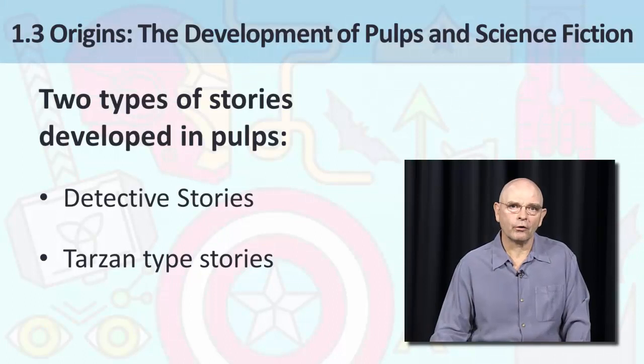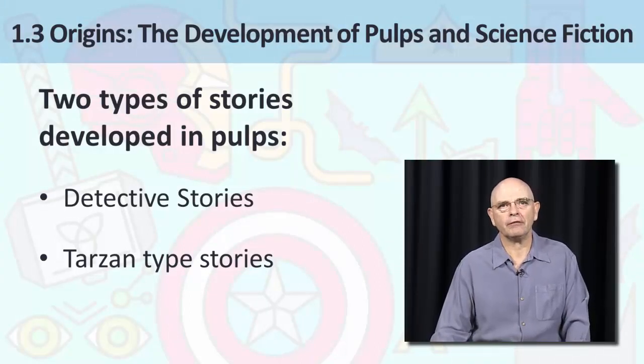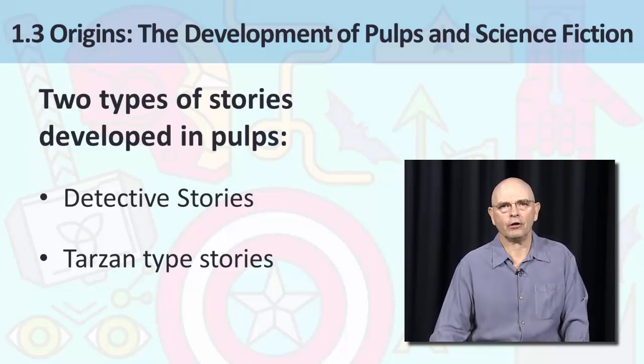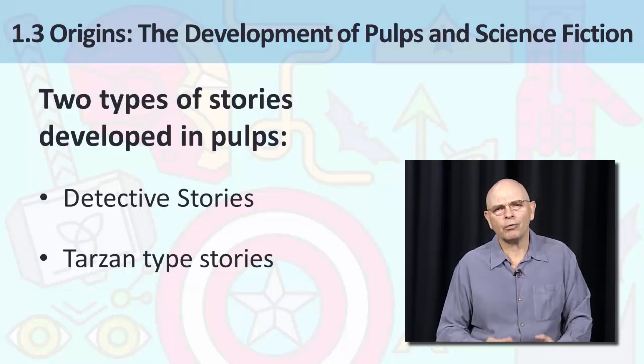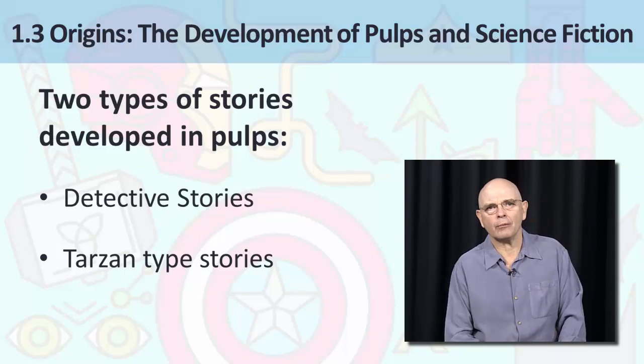So pulps contained stories that appealed to an increasing urban or city-based population. Two important sorts of stories developed. One sort showed the concerns of people living in cities with crime, and the other had a sort of nostalgia for earlier times, or at least the way people imagined earlier times. So there were detective stories and what I'd refer to as Tarzan-type stories.